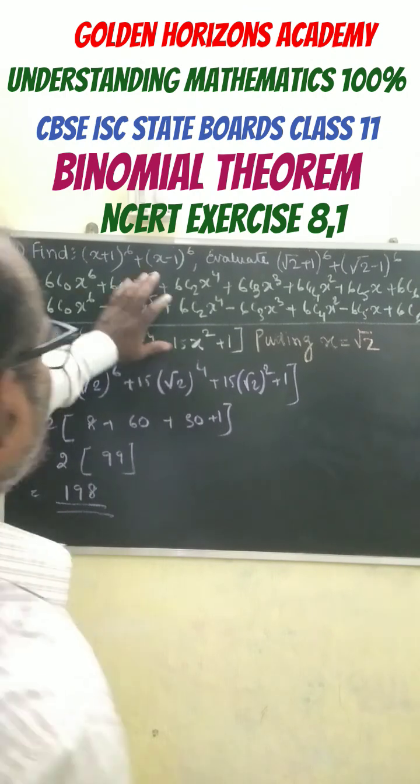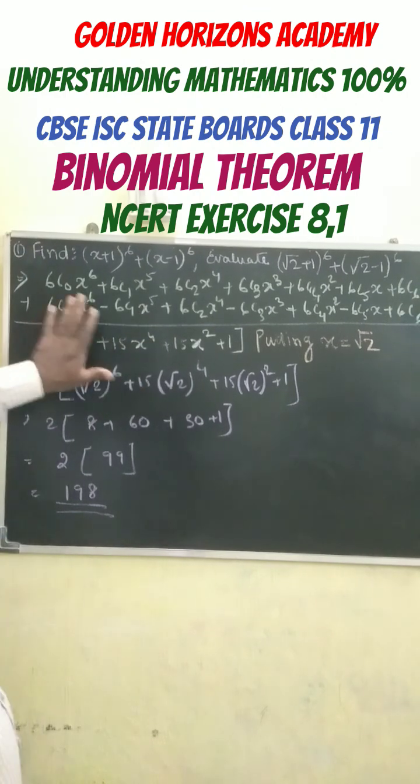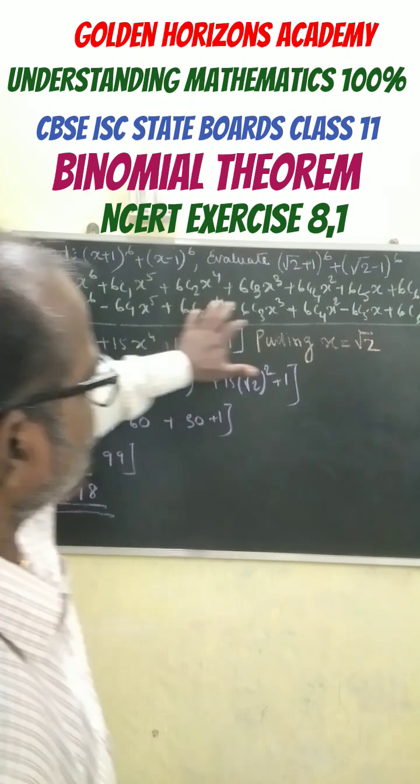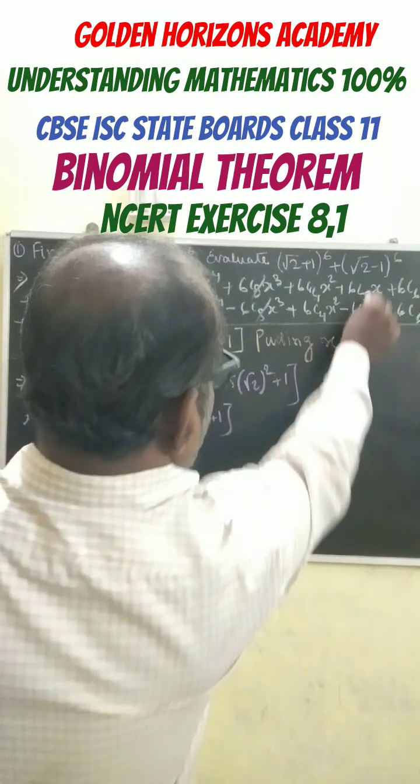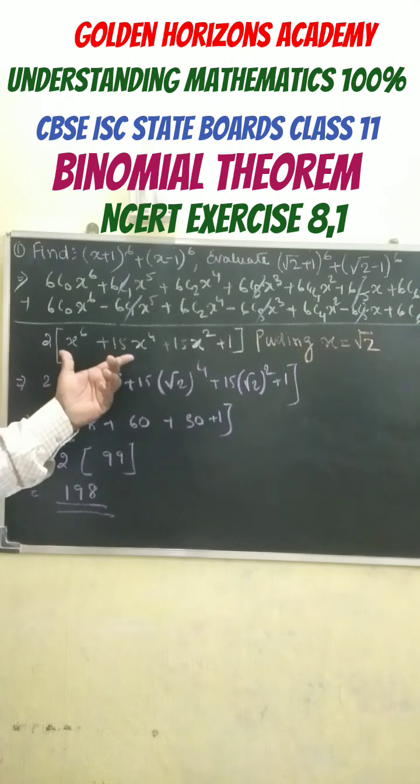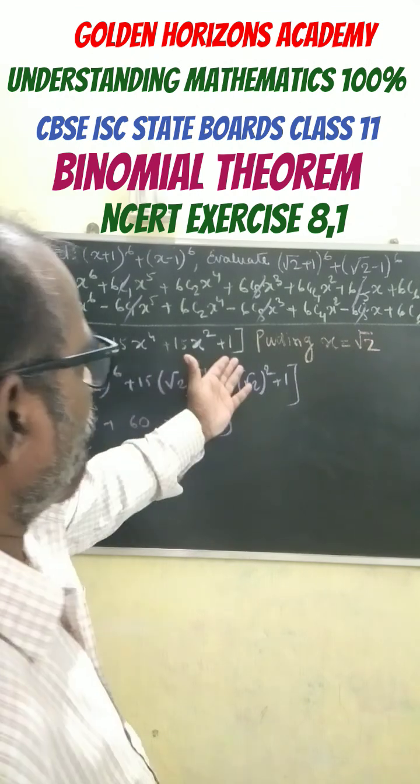So this one simplification, we get here, this gets cancelled off, in this way gets cancelled off. Finally, this and then gets cancelled off, this gets cancelled off, and this gets cancelled off. And our simplification, we get in this format.